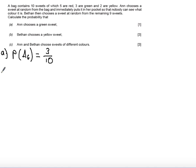Part B says find the probability that Bethan chooses a yellow sweet. So first of all, we've got to consider what could happen in this situation because Anne is going to choose before Bethan chooses.